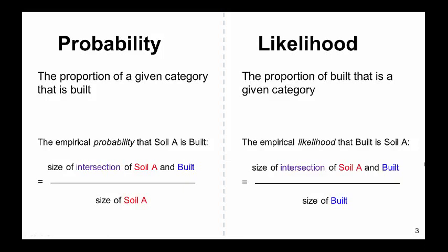In contrast, likelihood computes the proportion of total built area that is in a given category. To calculate the likelihood of built on soil A, you use the equation: size of intersection of soil A and built, divided by size of built. These ratios are frequently used to make maps to predict where change will occur. It is not immediately clear which method would be more appropriate for prediction. To clarify some of the differences, we will compute the probability and likelihood for two soil types.